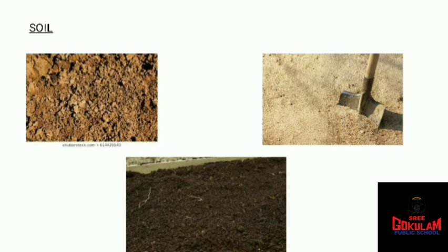Loam soil contains something called humus. Humus is made of rotted, dead, and decayed plants and animals. This humus makes the soil very fertile, meaning all plants and trees can grow in it really well. So we have studied three types of soil: clay soil, sandy soil, and loam soil.